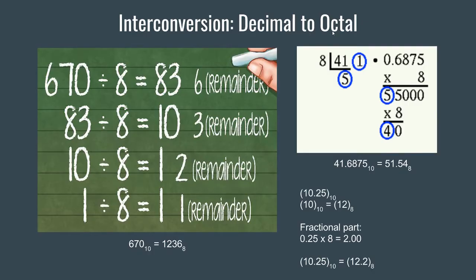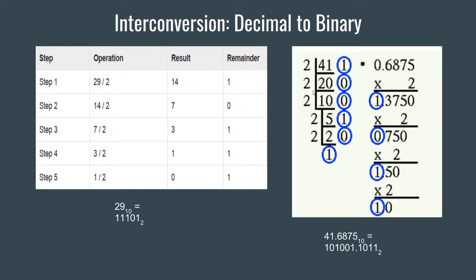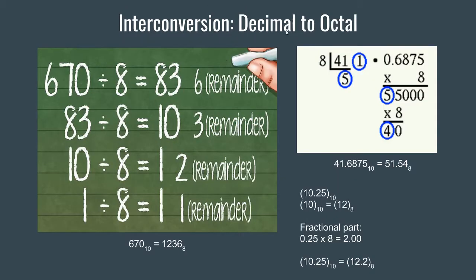We already know that the base used in the octal number system is 8, that is base 8. When we converted decimal to binary, we divided the decimal number by 2. But in case of octal, we will divide the decimal number by 8.